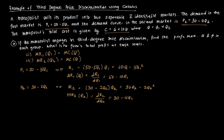We also need marginal cost, which is the same for both groups. The cost function is 10Q plus 6, so marginal cost — the derivative of the cost function with respect to Q — equals 10. That's a constant marginal cost.